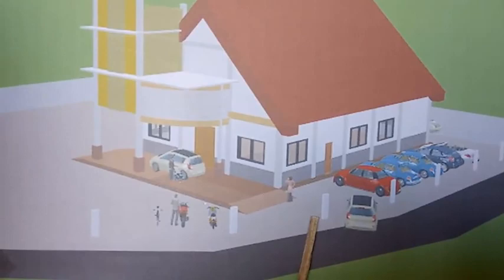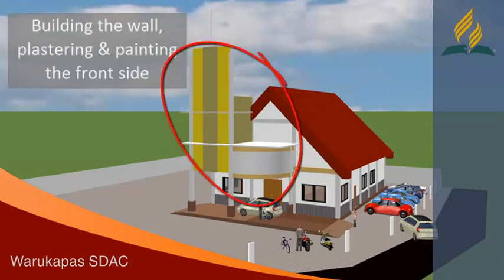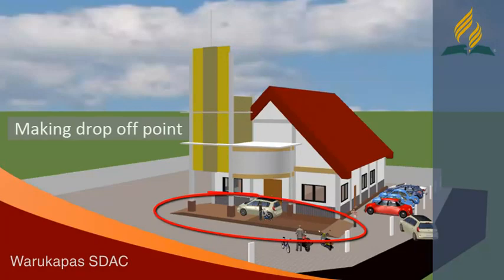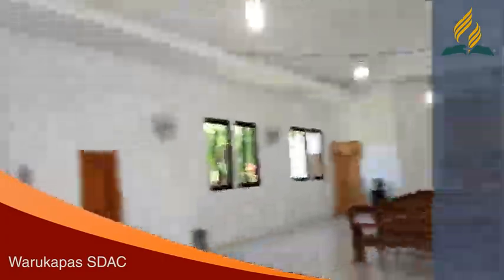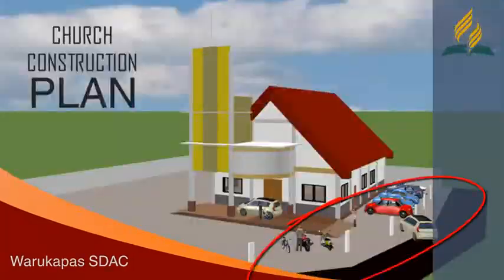In short, these are the construction parts that need to be done by the builder team and Warukapa's church. First, building wall, plastering, and painting the front side. Second, plastering and painting the outside church building. Third, making the drop-off point. Fourth, installing electricity and lamps. And last, covering the gutter so vehicles can park directly.